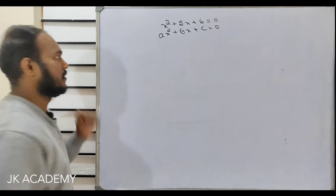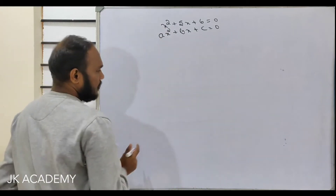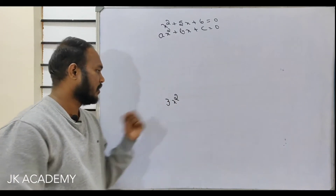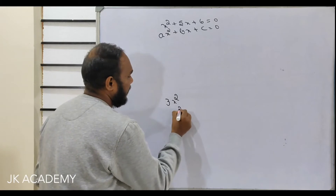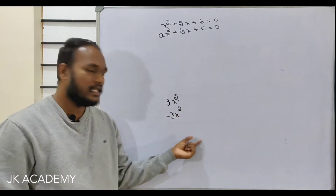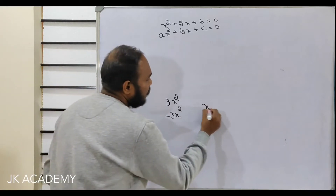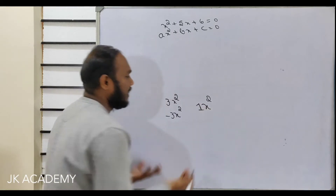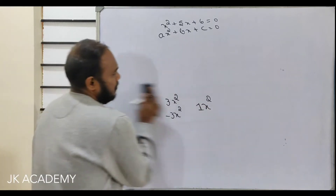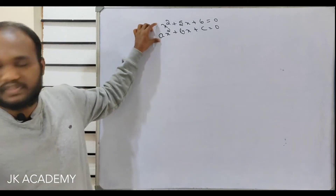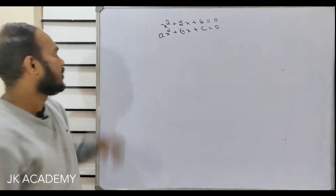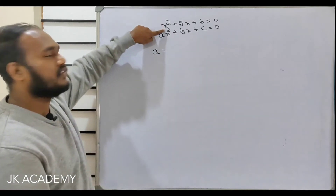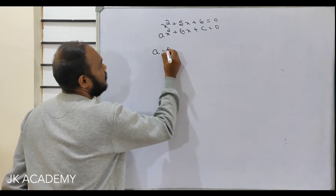Let's compare the coefficients of both equations. The coefficient of x squared here is a, and in our equation it is 1, so a equals 1. For the x coefficient, b compared with 5 gives b equals 5. The constant term c compared with 6 gives c equals 6.